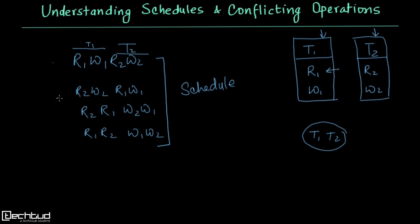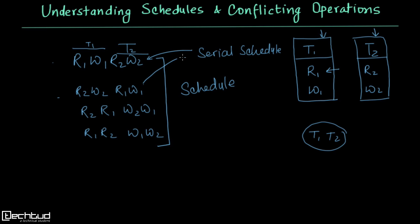The first ordering — R1 W1 R2 W2 — executes all operations of T1 then all operations of T2, so this is a serial schedule. Similarly, R2 W2 R1 W1 is also a serial schedule because first T2 executes, then T1. Both execute the transactions serially, one by one.